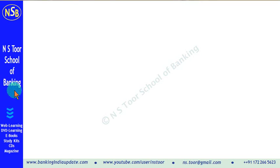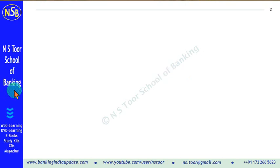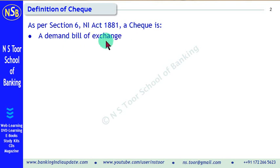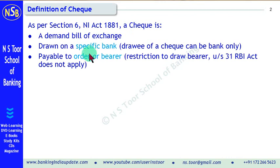Hello students. In this lecture we shall discuss basic aspects of a check. First of all, the definition of a check. According to Section 6 of the Negotiable Instrument Act, a check is a demand bill of exchange, drawn on a specific bank, and it is payable to order and bearer. These are three important features of a check.